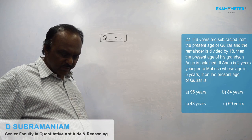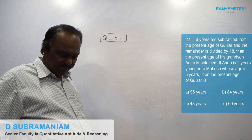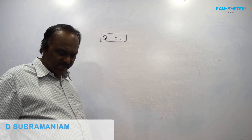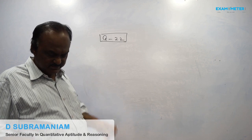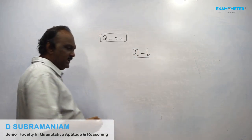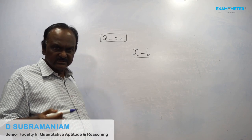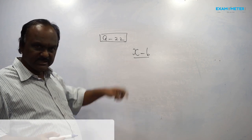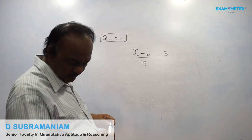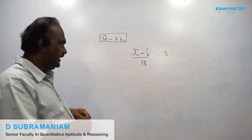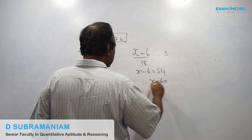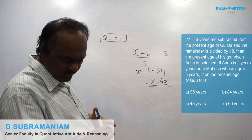If 6 years are subtracted from the present age of Gulzhar and the remainder is divided by 18, then the present age of his grandson Anup is obtained. Anup is 2 years younger than Mahesh, whose age is 5 years. Then the age of Gulzhar is what? Take Gulzhar's age as x. 6 years subtracted gives x minus 6, divided by 18, equals 3 (Anup's age). So x minus 6 equals 54, therefore x equals 60. So the present age of Gulzhar is 60. So answer is 60.